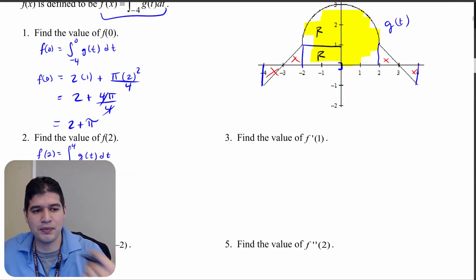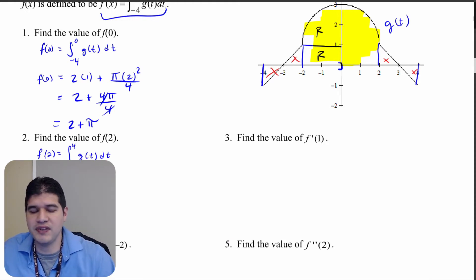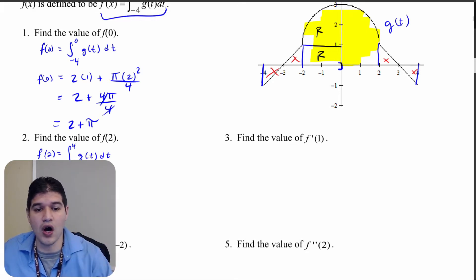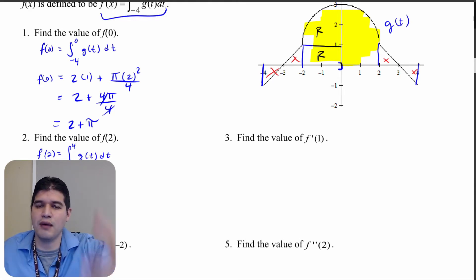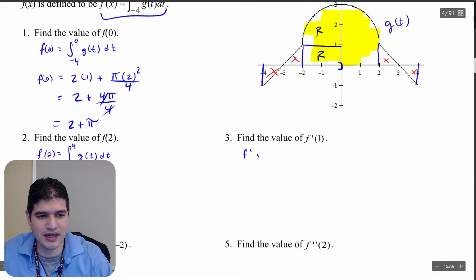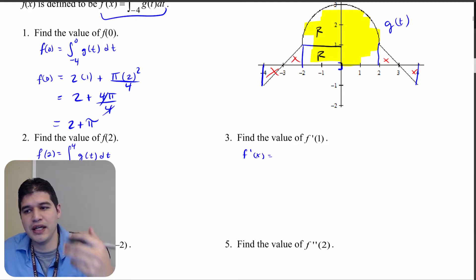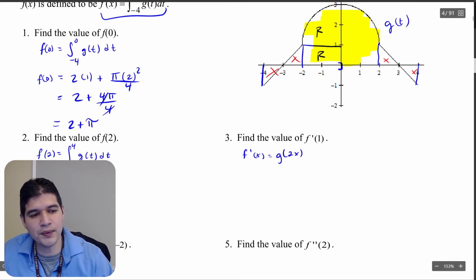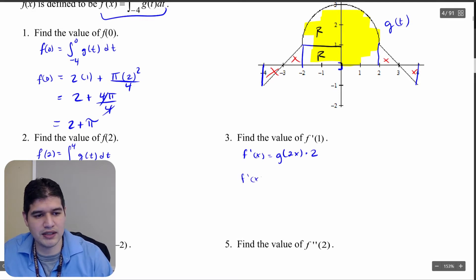Now let's find f prime of x. We're looking at the derivative of a function defined as an integral. Using the second fundamental theorem of calculus with the chain rule, I substitute in 2x to my function to get g of 2x, then multiply by the derivative of 2x which is 2. So f prime of x equals 2g of 2x.